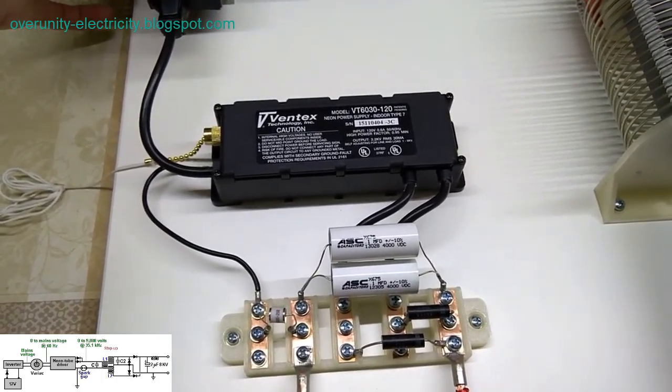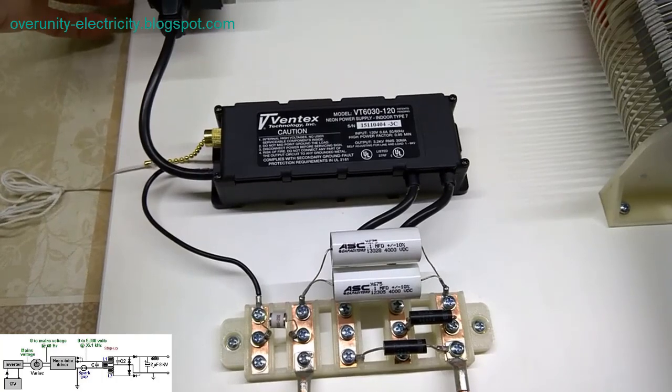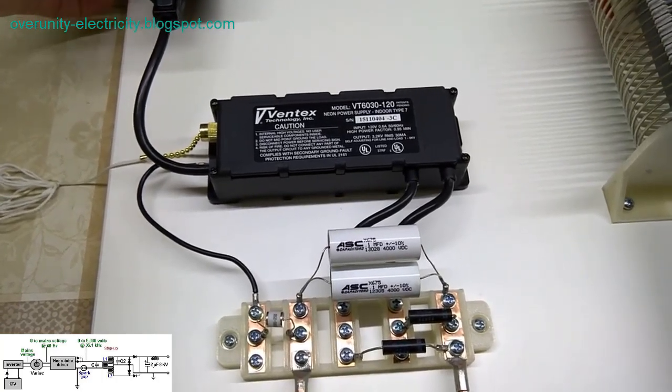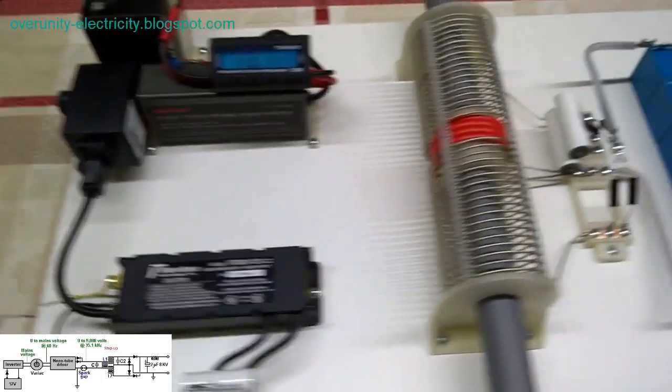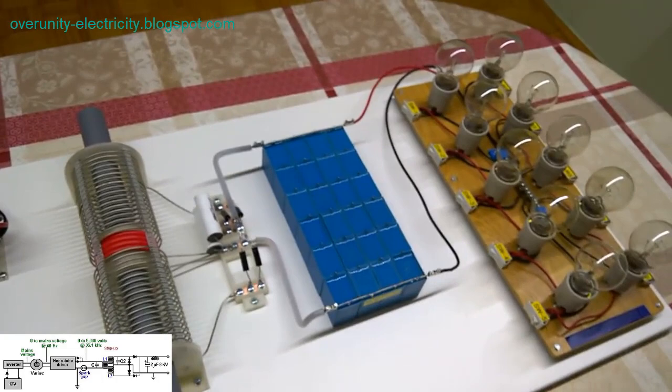the secondary coil mimics this behavior as long as its wire length is an even division or multiple of the primary coil's length. This synchronization allows for the consistent generation of high voltage, providing an essential aspect of Smith's device.